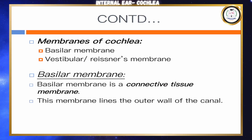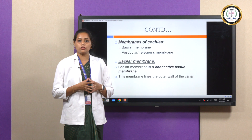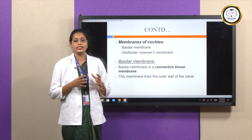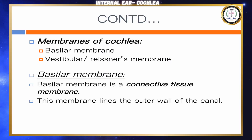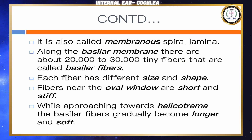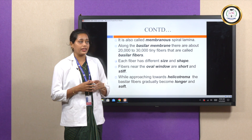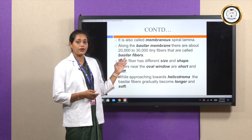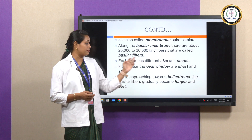The cochlea contains two membranes. The first is the basilar membrane, and the other is the vestibular membrane, also known as the Reissner's membrane. The basilar membrane is a connective tissue membrane lining the outer wall of the canal, also known as the membranous spiral lamina.